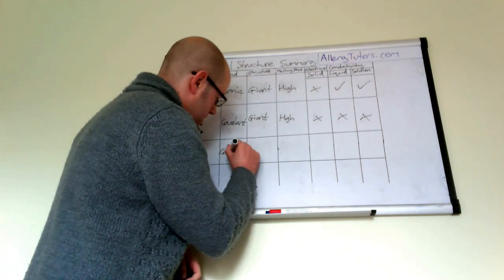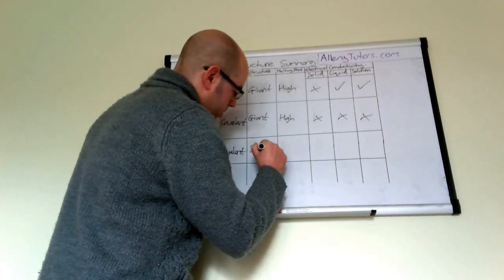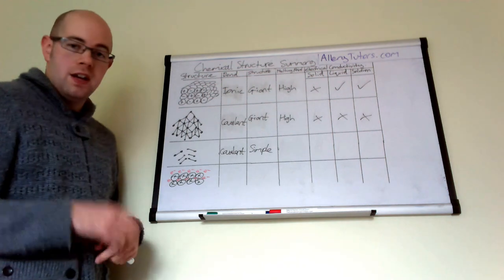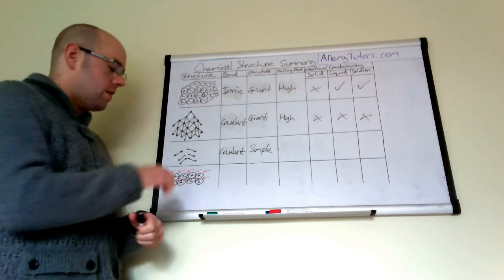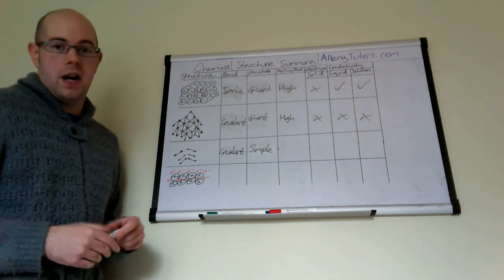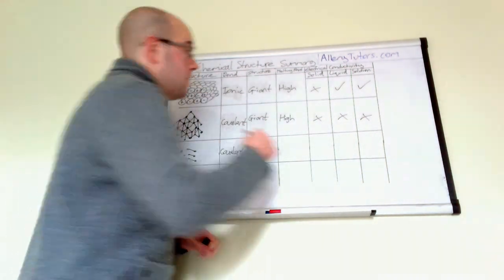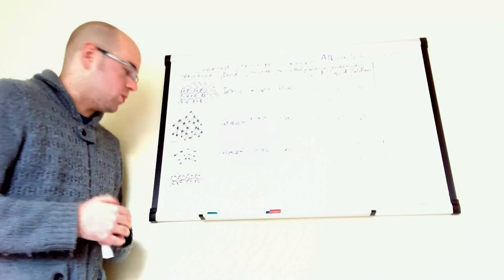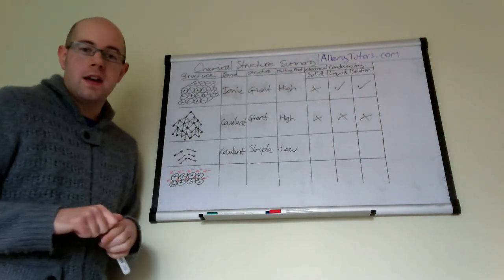The next one is also covalent, but these are classed as simple covalent. These don't form giant structures — they exist as simple pairs or small molecules. Examples include iodine, chlorine, or oxygen. Most things like chlorine, nitrogen, and oxygen generally have very low melting points, because all they have are weak intermolecular forces between the molecules, which makes them very easy to melt.